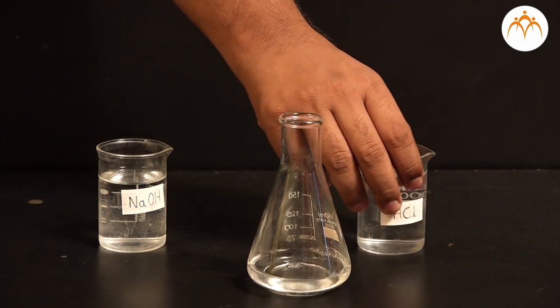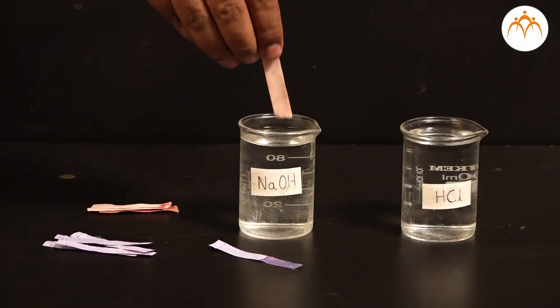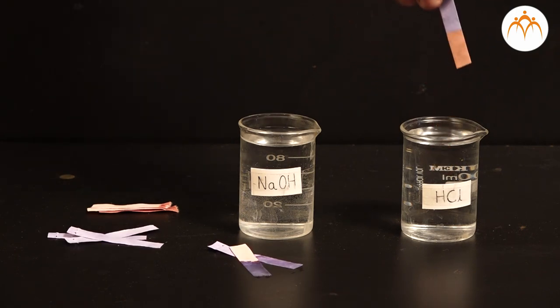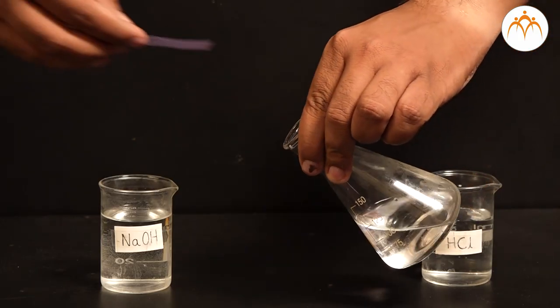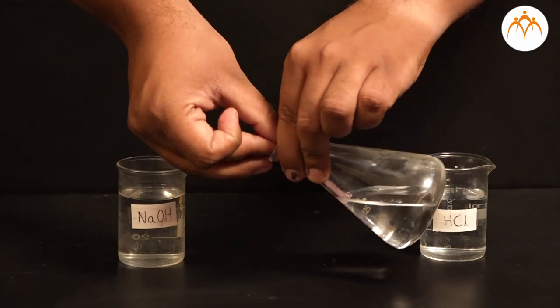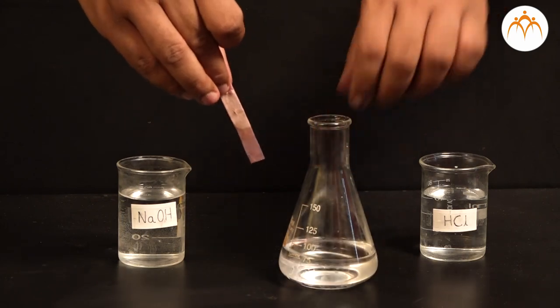Put litmus paper in each solution. It shows NaOH as basic, HCl as acidic, and NaCl and H2O are neutral. This proves that products are formed having totally different properties than the reactants.